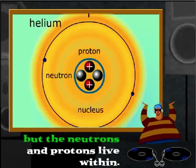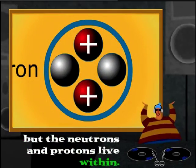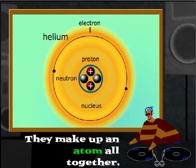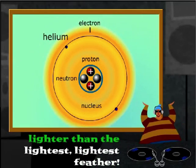electrons spin. But the neutrons and protons live within. The three make up an atom all together, lighter than the